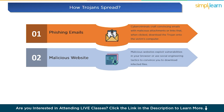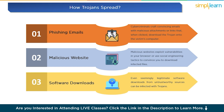Malicious websites: visiting compromised or malicious websites can also lead to unintentional Trojan downloads. These sites exploit vulnerabilities in your browser or use social engineering techniques to convince you to download infected files. The third method is software downloads — even seemingly legitimate software downloads from untrustworthy sources can be infected with Trojans. Always download software from official and reputable websites.